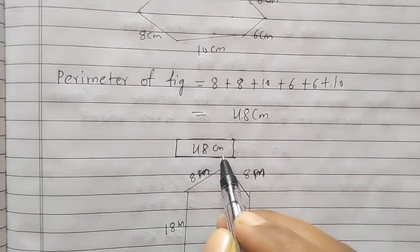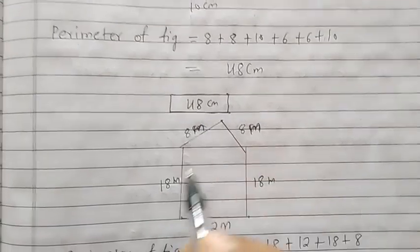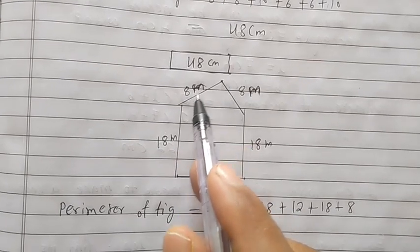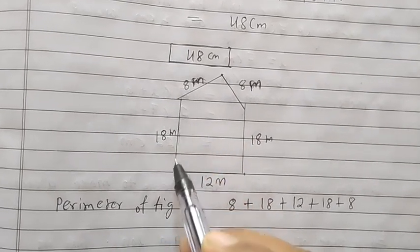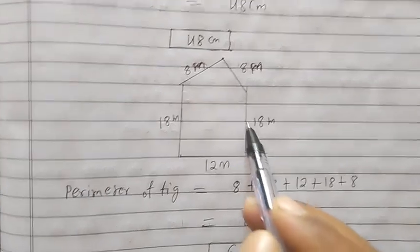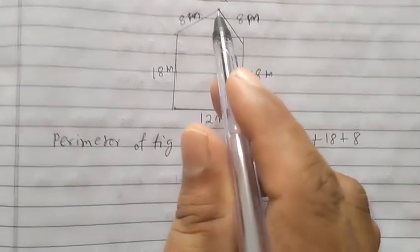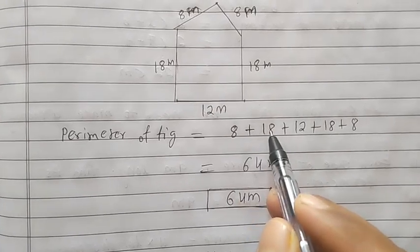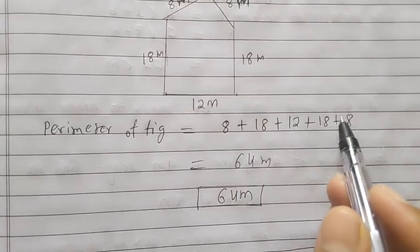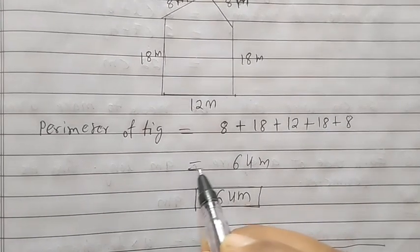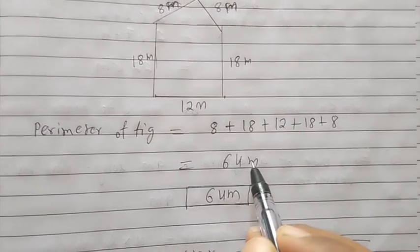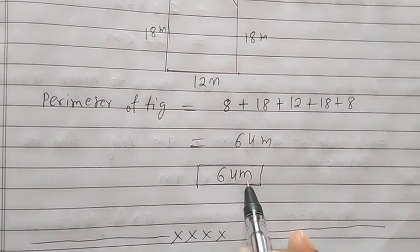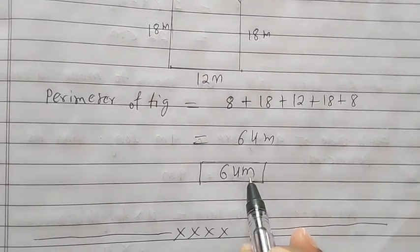Now we want to find the perimeter of the third figure — the sum of all its sides. Perimeter of the figure is 8 plus 18 plus 12 plus 18 plus 8, which equals 64 meters. So the perimeter of this figure is 64 meters. Thank you very much.